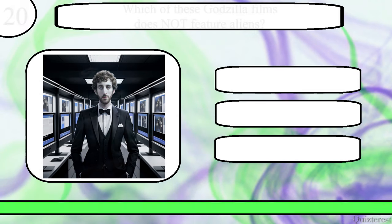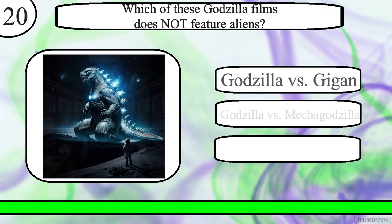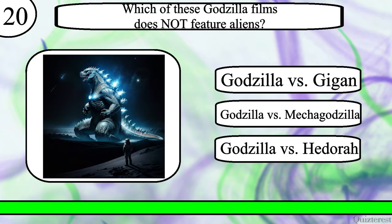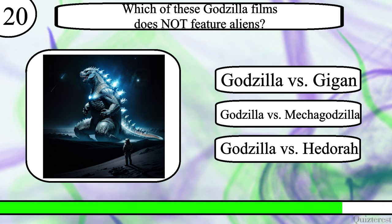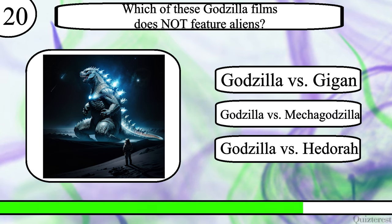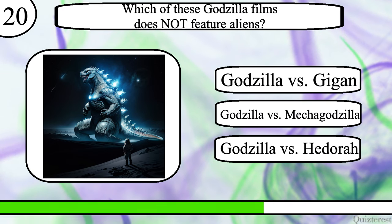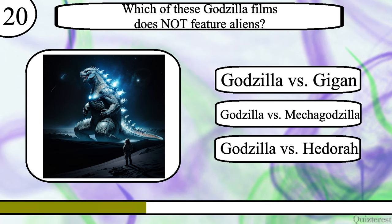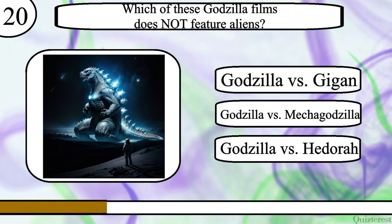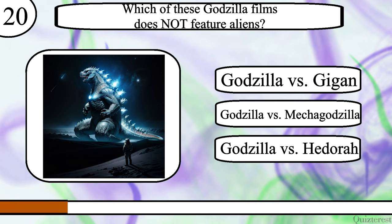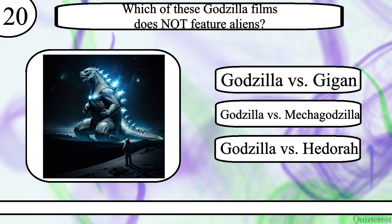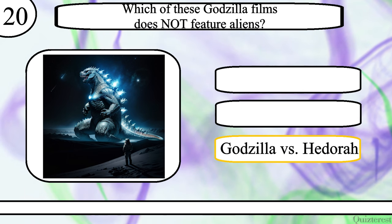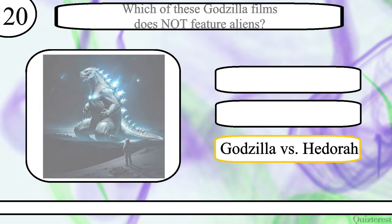Question 20. Which of these Godzilla films does not feature aliens? Godzilla vs. Gigan, Godzilla vs. Mechagodzilla, or Godzilla vs. Hedorah? The correct answer is Godzilla vs. Hedorah.